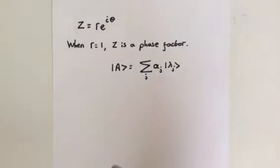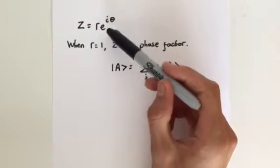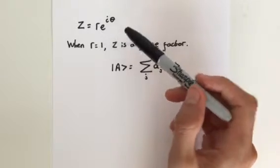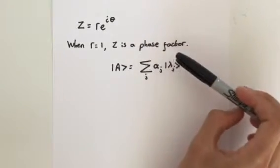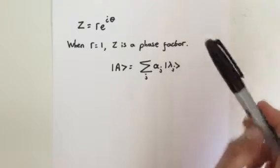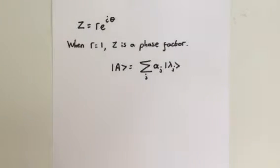A complex number can be written as r e to the i theta. When r is equal to 1, z is a phase factor. In problem 1, I stated can you see why we could ignore the phase factor, and I went over two problems to show you that you could.